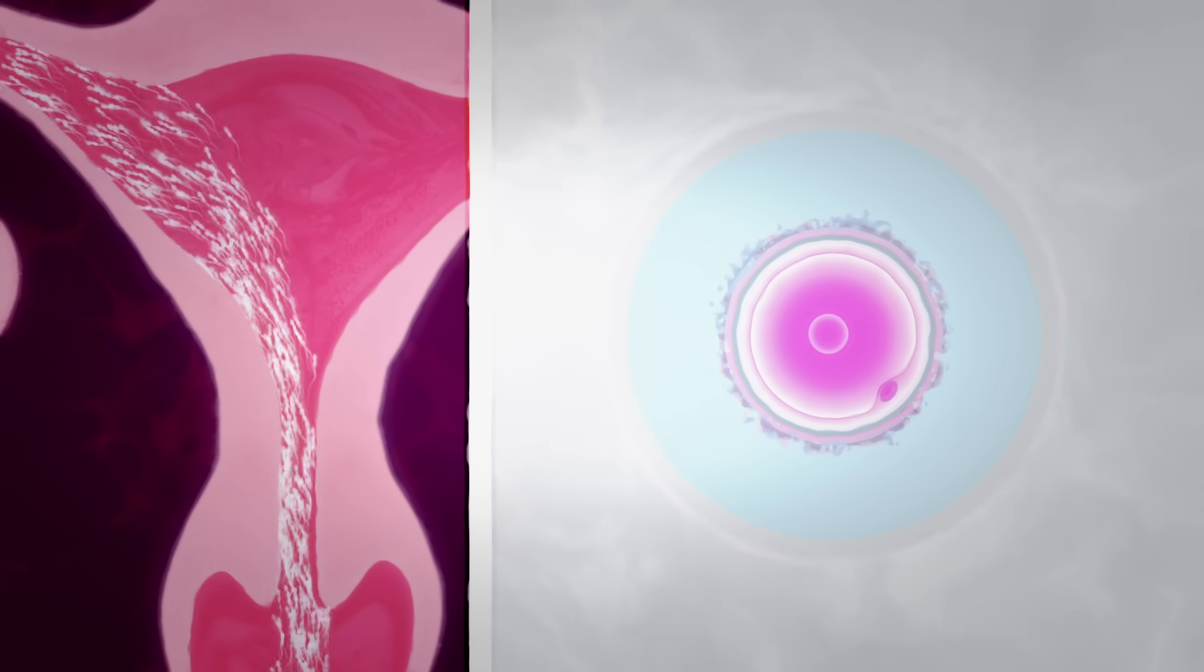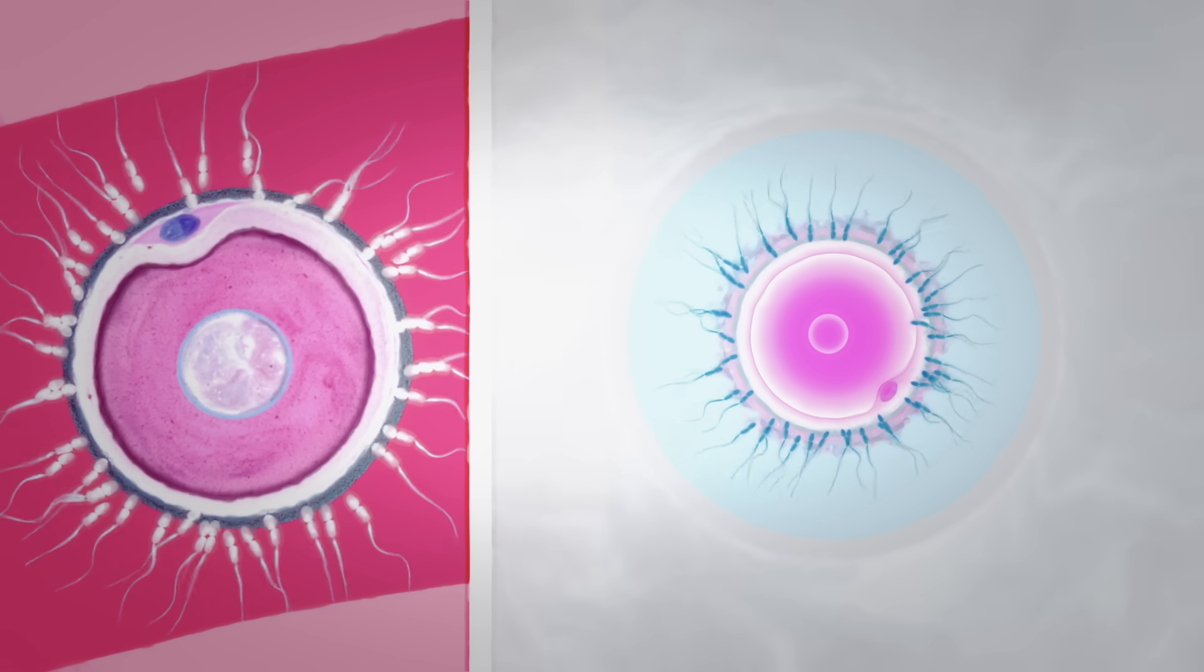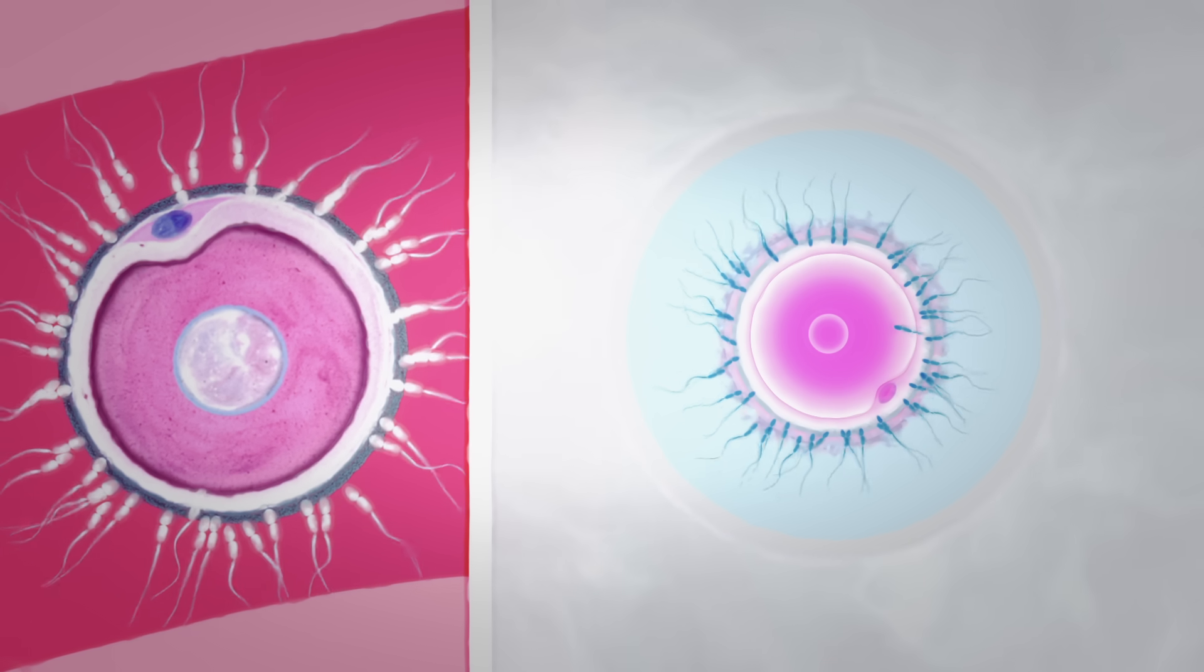Fertilization can occur by one of two techniques. In the first, the eggs are incubated with thousands of sperm, and fertilization occurs naturally over a few hours.